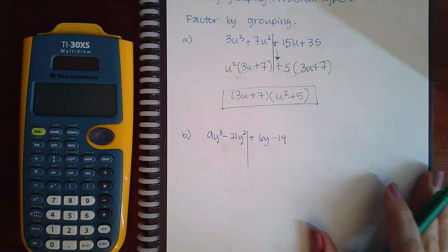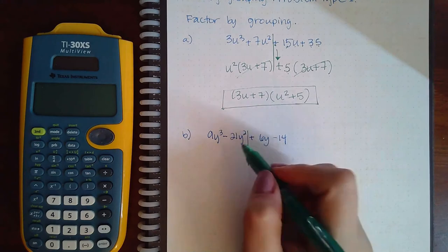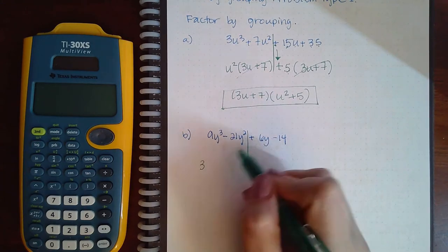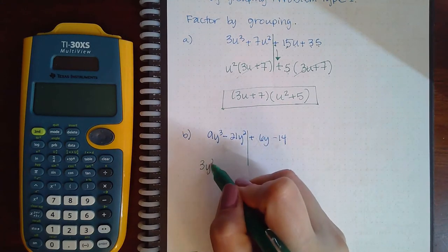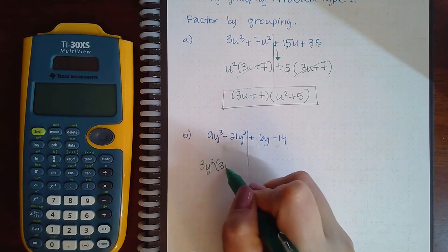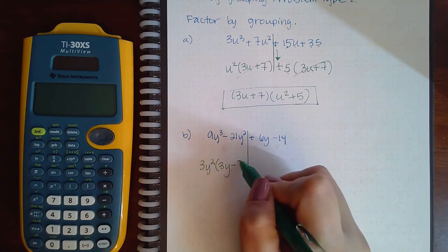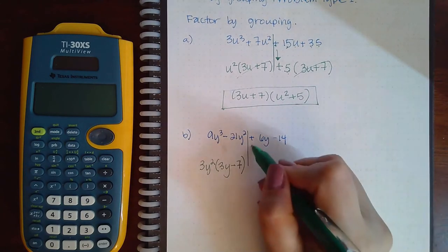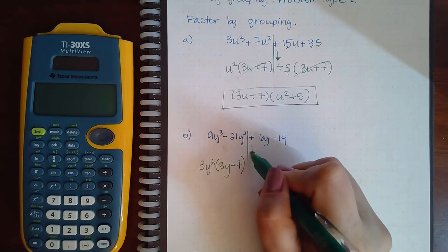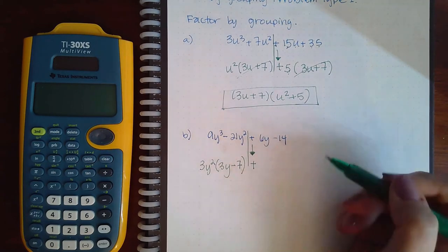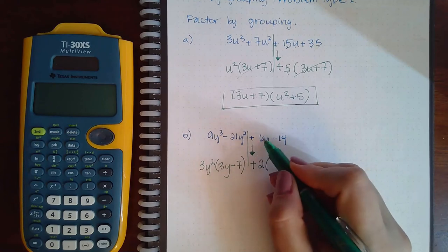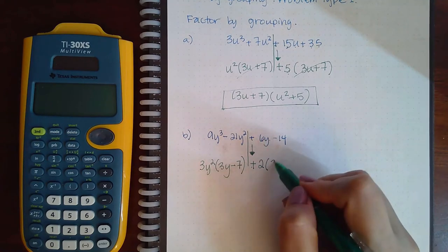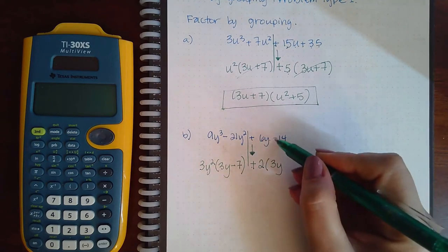So for part b, the left hand side can both be divided by 3 and the lowest power y², which will leave me with 3y minus 7 and no more y's. I must bring down this plus sign. These two guys can be divided by 2, so positive 6y divided by positive 2 is positive 3y.